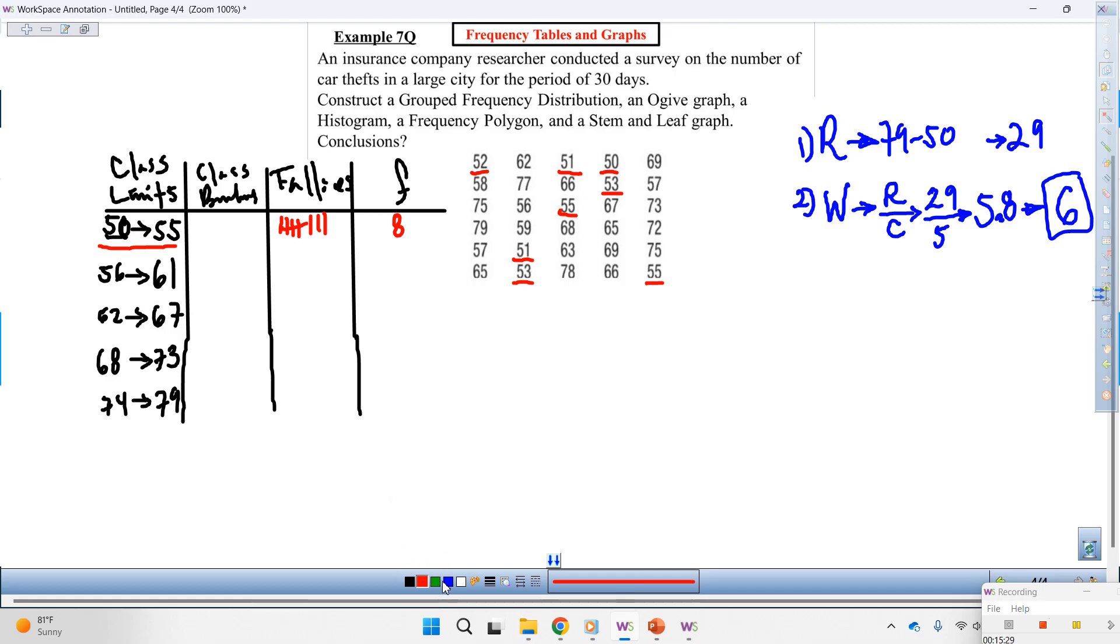Second class. 56 to 61. We got one, two, three, four, five. Is that it? Did I miss anything? One, two, three, four, five. One, two, three, four, five. Two, three, four, five, six, seven. All right.